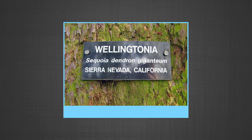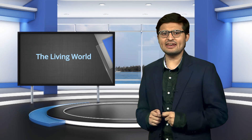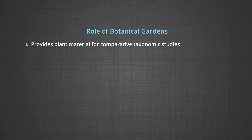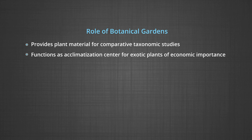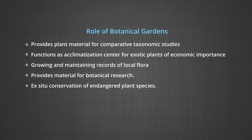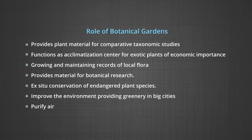In botanical gardens, each plant is labelled with its scientific name and family. The International Association of Botanical Gardens was established in 1962 and published the International Directory of Botanical Gardens in 1983. The roles of botanical gardens include: providing plant material for comparative and taxonomic studies; functioning as acclimatization centers for exotic plants of economic importance; growing and maintaining records of local flora; providing material for botanical research; ex-situ conservation of endangered plant species; improving the environment by providing greenery in big cities; and purifying air.